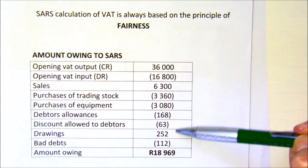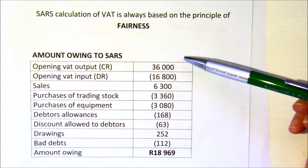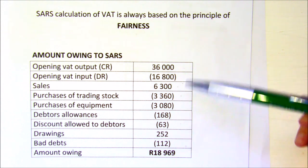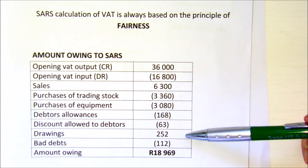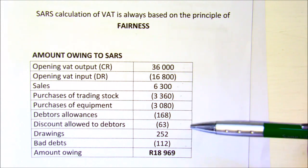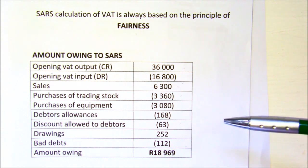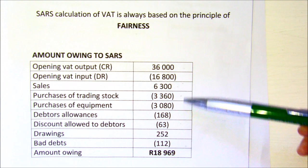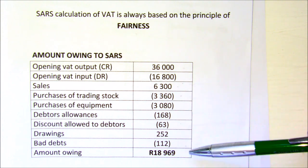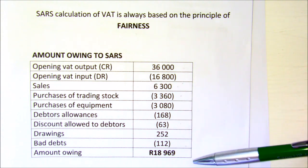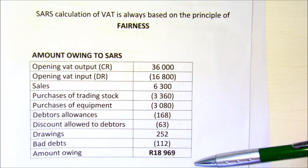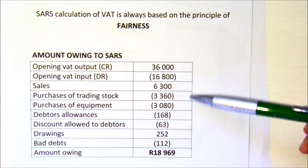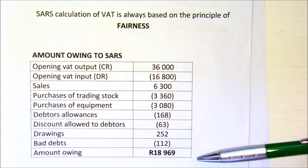This alternative calculation method simplifies the process and avoids confusion between input and output accounts. In Grade 11 you do have to do ledger accounts and know the entries, but I would also encourage you to be able to do the calculation. Learners, practice these ledger accounts and hopefully you'll get a chance to practice some of these calculations as well.